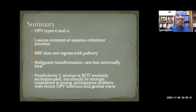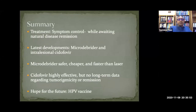In summary for RRP: common subtypes are HPV types 6 and 11; lesions are most common at squamocolumnar junctions; RRP does not regress with puberty; malignant transformation is rare but unfortunately universally fatal; prophylactic cesarean section is not routinely recommended but can be considered in a young primigravida with genital warts. Treatment is essentially symptom control while awaiting natural disease remission. The workhorse is microdebrider plus intralesional cidofovir. Microdebrider is safe, cheap, and effective, and ultimately the hope is the HPV vaccine.